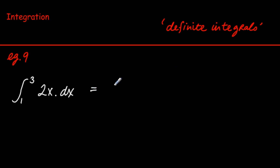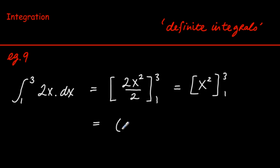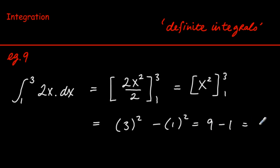Example 9: definite integrals. We're integrating 2x dx between the limits 3 and 1. We integrate in the normal way — raise the power by 1 and divide by the new power — giving us x² evaluated between 3 and 1. We substitute in 3 and take away the value when we substitute in 1: 3² minus 1² gives us 9 minus 1, so the answer is 8.